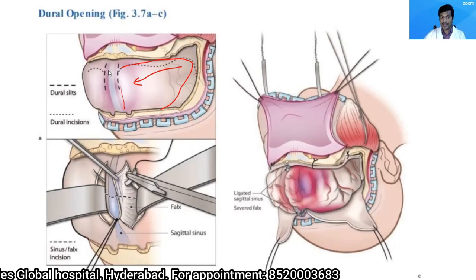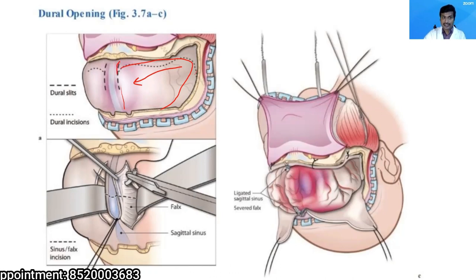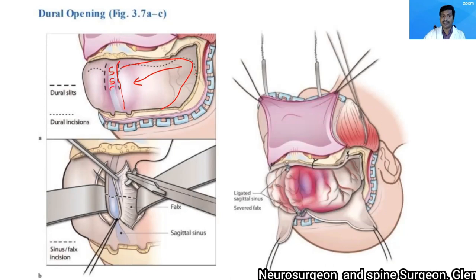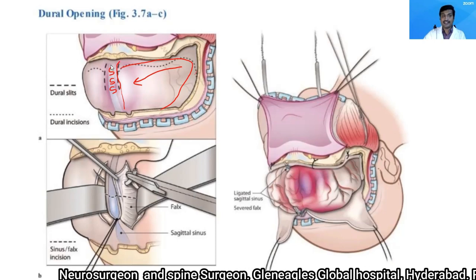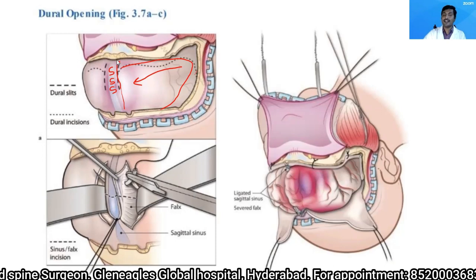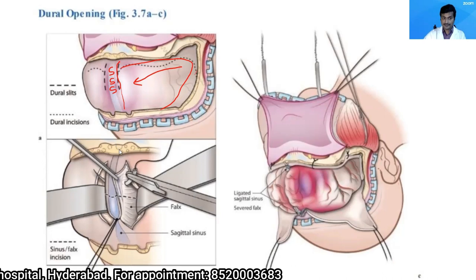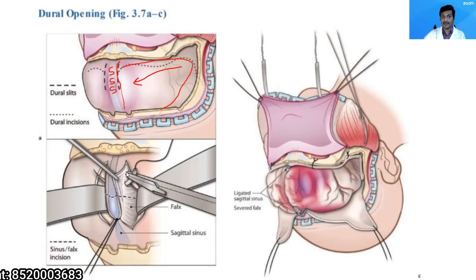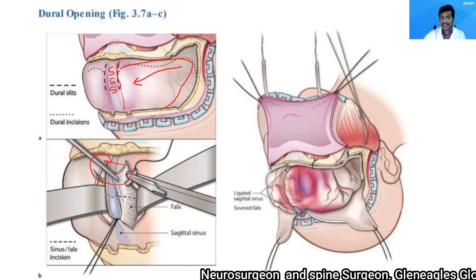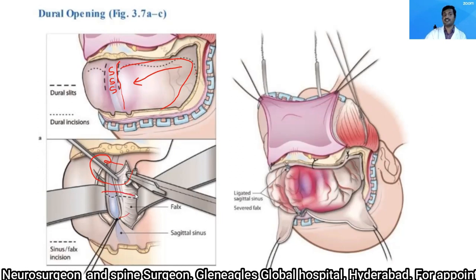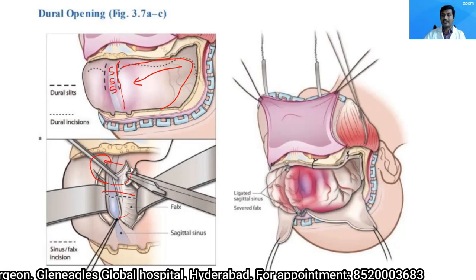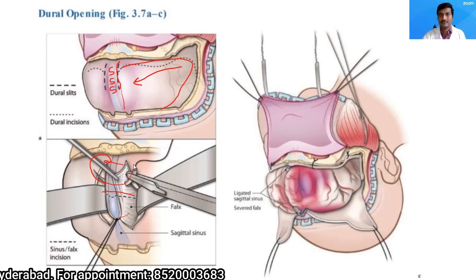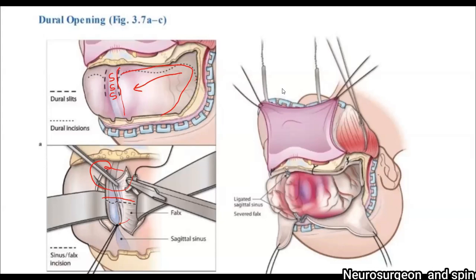If the superior sagittal sinus must be divided, take dural slits paramedially on either side of the sinus, as low as possible near the crista galli. Then perform double ligature of the superior sagittal sinus: pass a needle through the falx cerebri across the sinus, place a second ligature, and cut the sinus between the two ligatures. Ensure ligatures will not slip — double ligature if required. This completes the dural reflection.